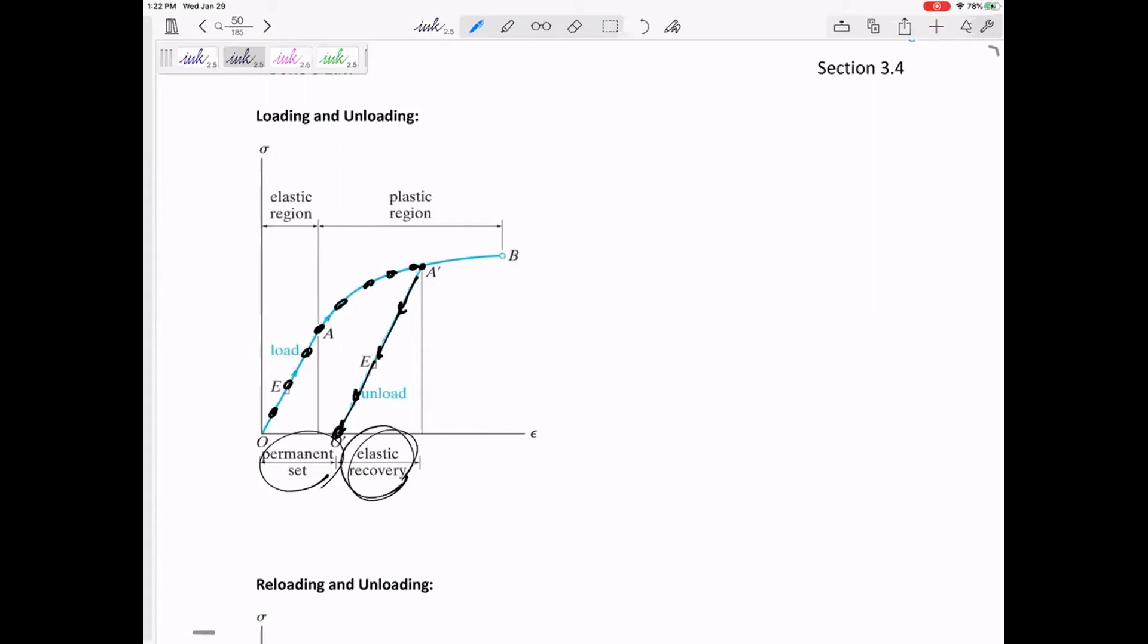So, if we load into the yielding region, it will unload with a slope of E.